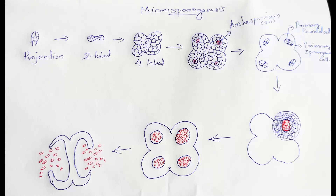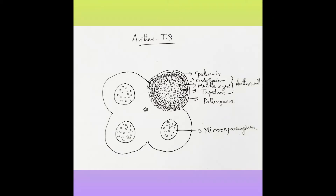The anther wall consists of four layers: epidermis, endothecium, middle layers, and tapetum. Epidermis is the outermost layer; its function is protection. The second layer is called endothecium, the third layer is called the middle layer, and the fourth layer is called tapetum. Tapetum is the innermost layer and is a highly nutritive layer. It is utilized by the developing microspores or pollen grains.